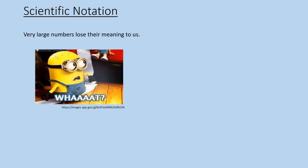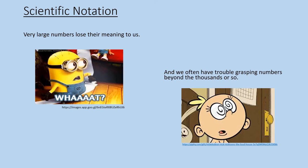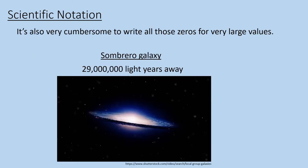Our first useful technique is scientific notation. Okay, so what is it and why do we need it? Well, here's the thing. Numbers beyond a certain size lose their meaning to us. Usually our brains don't work well visualizing numbers beyond the thousands, and perhaps we even struggle with that. And then for very large numbers, you have all those zeros.